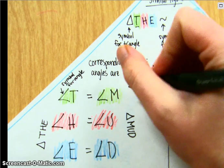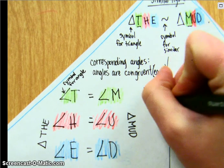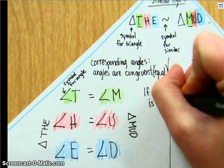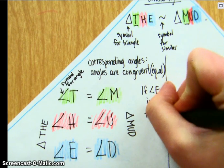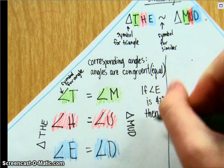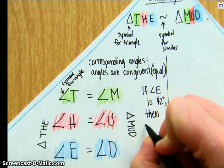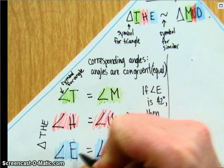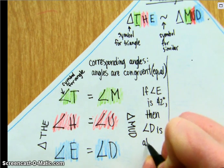So therefore, if I said, if angle E measured to be 42 degrees, then because these two are similar, these two triangles are similar, then angle D corresponds to angle E, it is also 42 degrees.